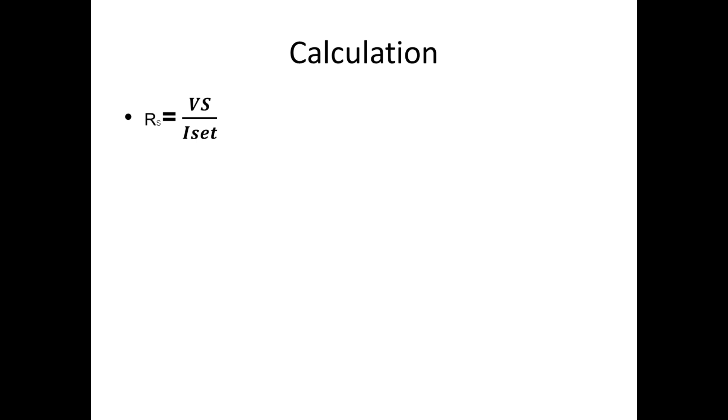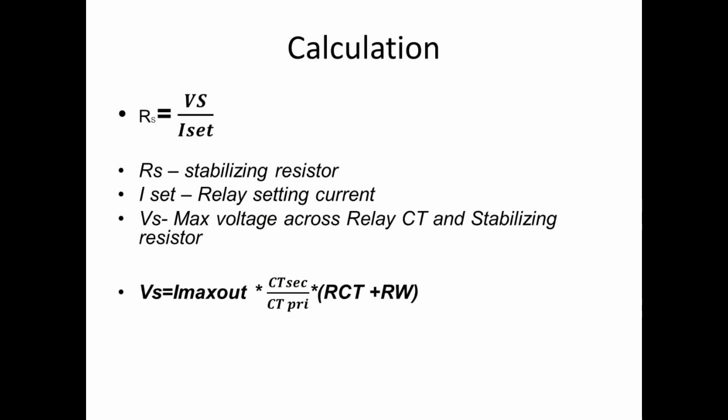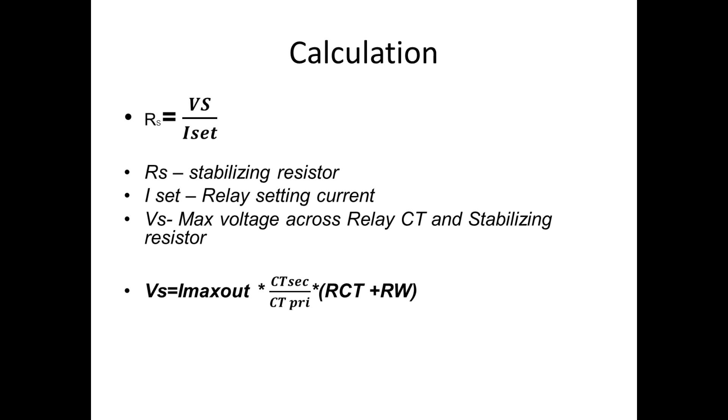Now, we are going for calculation. RS is equal to VS by ISET. The abbreviation for this equation is: RS is stabilizing resistor. ISET is relay setting current which we are going to set on relay for pickup and issue tripping. VS is a maximum voltage across the relay CT and stabilizing resistor. To find this, we have another formula for calculating, i.e., VS is equal to Imax out into CT secondary by CT primary into RCT plus RW. Imax out is a maximum external fault condition current. RCT is CT secondary resistance. RW is a total resistance of the wire conductor.